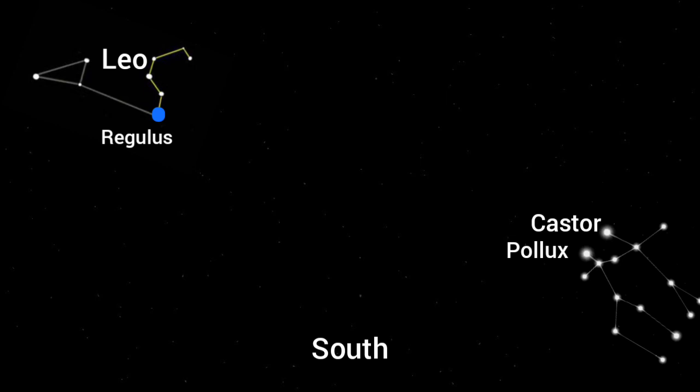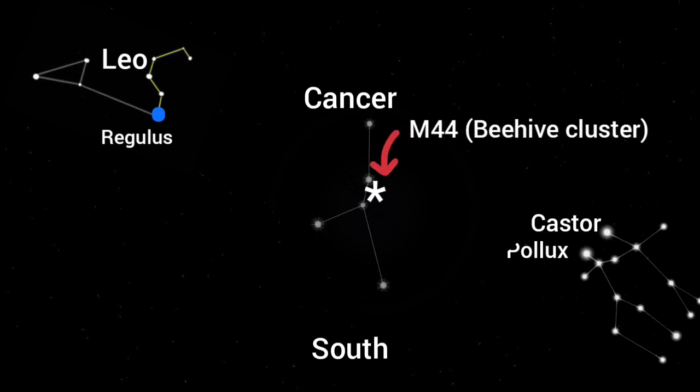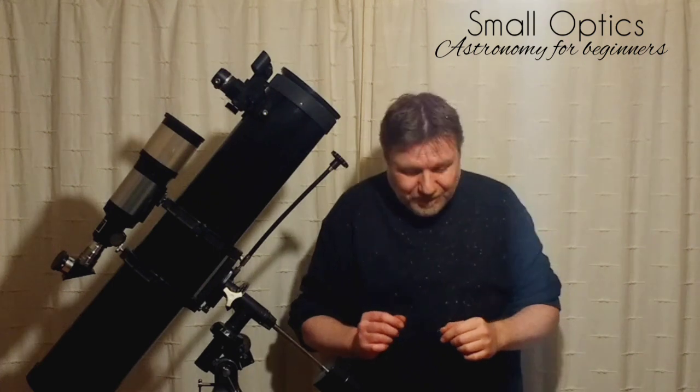Castor and Pollux are the two dominant stars in Gemini. If you sight directly in between Regulus and Castor and Pollux, you will see two really faint stars almost on top of each other — those are like the body of the crab in Cancer. Our target, the Beehive M44, is right in the center of those two faint stars, slightly to the right-hand side.